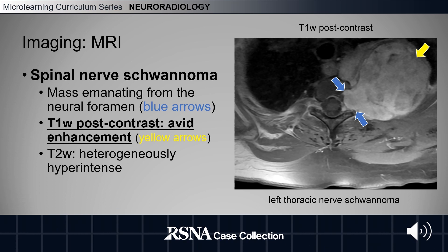Schwannomas can also occur within spinal nerves as a mass emanating from the neural foramen, as shown by the blue arrows in our image to the right. We still see avid post-contrast enhancement on T1-weighted images.